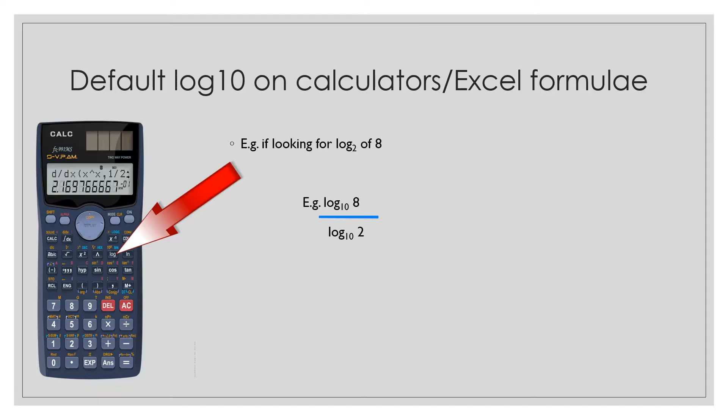So all we do is go back to the log button on our calculator or even in Excel, the log function, and then we put 2. So now we've obtained the log value for 2, and we divide the log10 value for 8 by the log10 value for 2. And now our answer is actually the log to the base 2 of that value. In this example we're looking at 8, so log10 of 8 divided by log10 of 2, and we see that the answer is 3.